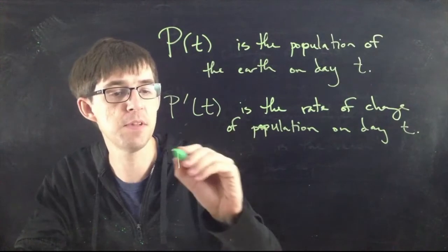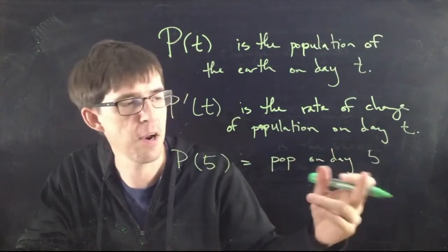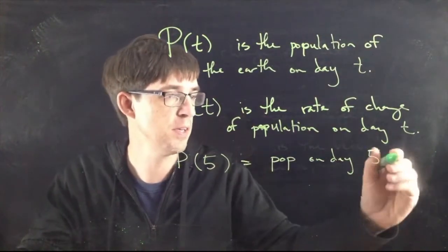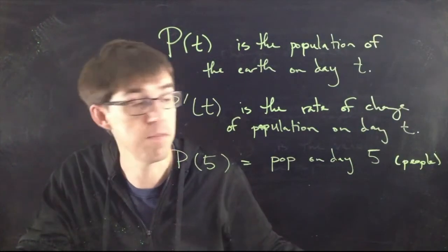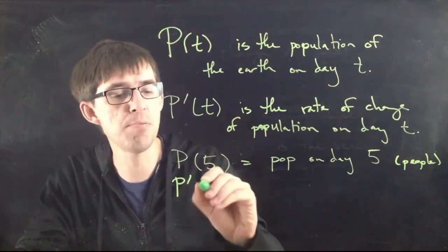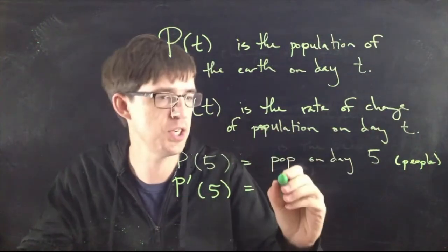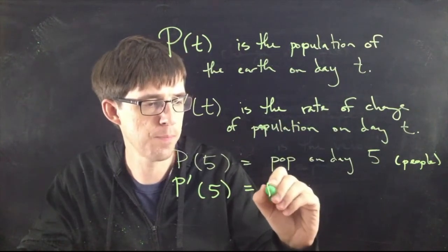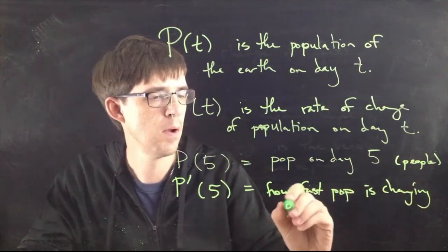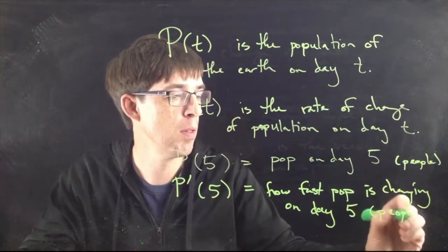So for example, if I were to write very specifically something like P(5), this means the population on day five. I don't care how you count the days. Let's say sometime you just start counting populations by day. P(5) would represent the population on day five. The units of this would be people, that's the units of population of the earth. I'm talking about people, not other creatures on the earth. That's what P(5) means. What about P'(5)? This little prime makes a big difference. It means something completely different. P'(5) means how fast is the population changing? So this would mean how fast the population is changing on day five. That's the meaning of this five here, how fast the population is changing on day five. And the units for that would be people per day.